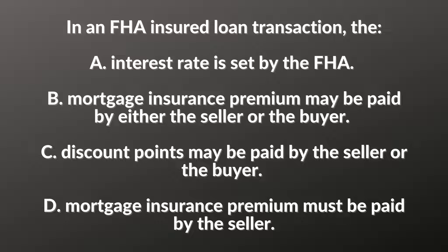Both B and D talk about mortgage insurance premium. It is 100% correct that mortgage insurance premium is what a borrower on an FHA loan would be paying. This is similar to PMI on conventional loans, but it is actually paid to the FHA. The FHA insures the lender, and the borrower pays the FHA mortgage insurance premium.